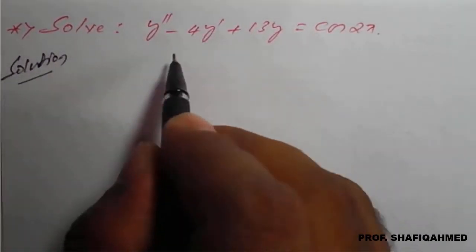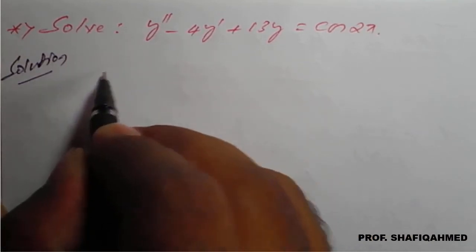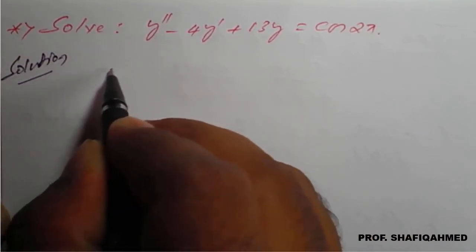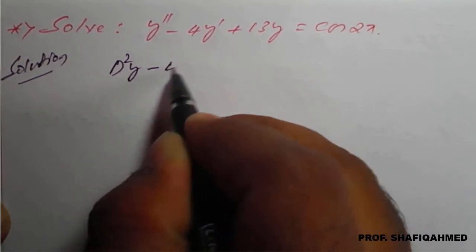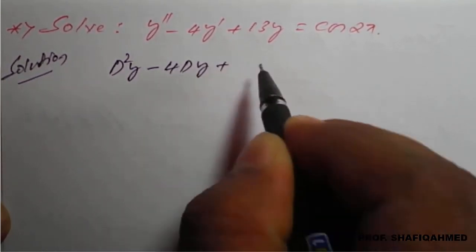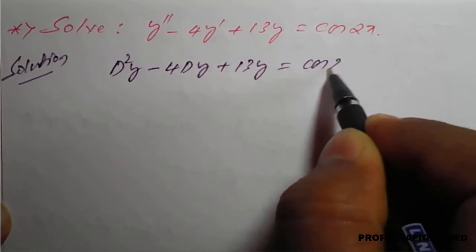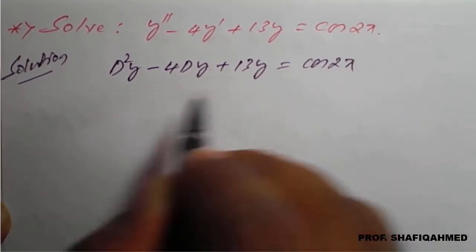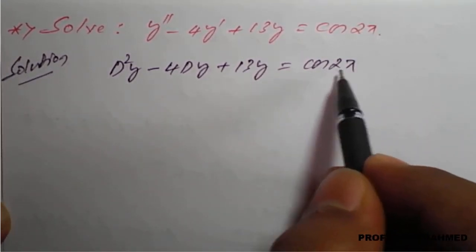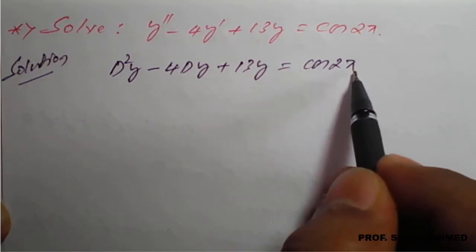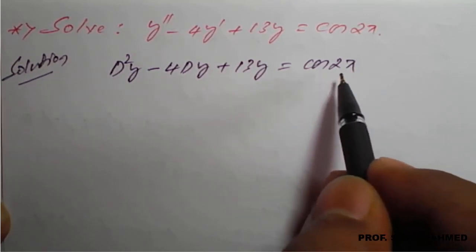The given differential equation we can rewrite as d squared y minus 4d of y plus 13y equal to cos of 2x. This is a non-homogeneous differential equation. The right hand side is the phi of x function, which is cos of 2x, so this belongs to type 2.